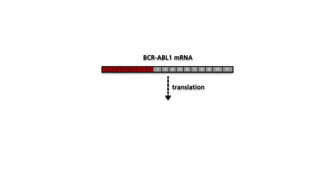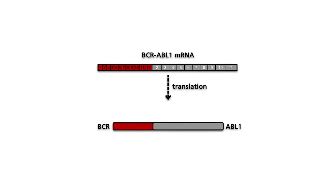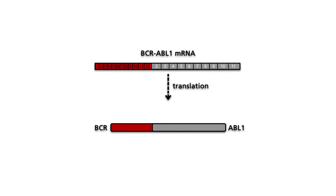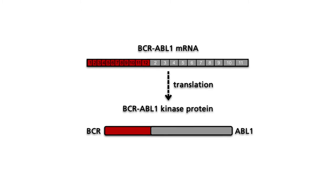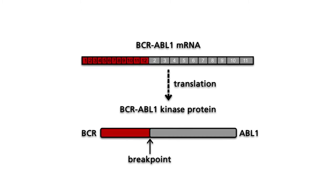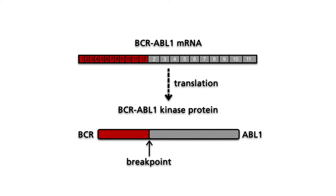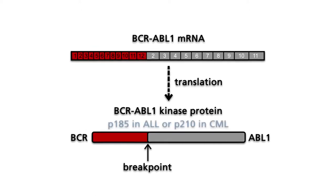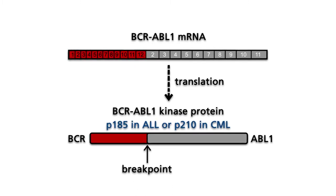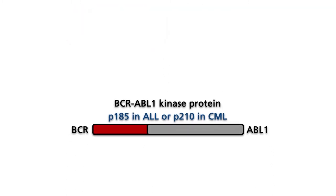The BCR-ABL gene is translated into a fusion protein with enzymatic activity, the BCR-ABL tyrosine kinase. The size of the protein depends on the exact position of the breakpoint. The two main proteins are named for their respective molecular weights: P185 and P210. Whereas P185 is the major translation product in acute lymphatic leukemia, or ALL, P210 is the principal one in chronic myeloid leukemia, or CML.